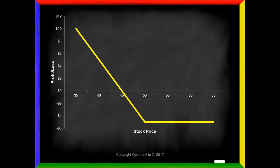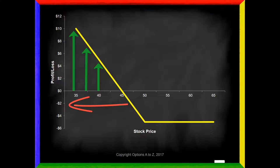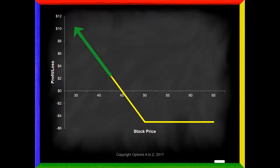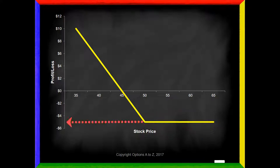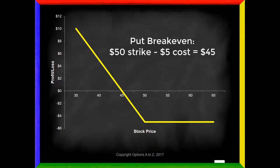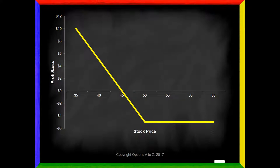Once you understand how to read profit and loss diagrams, strategies become much easier. Here's what a $50 put purchased for $5 would look like — it still resembles a hockey stick but moving in the opposite direction, so I can quickly tell this is a bearish outlook. I need the stock to fall to get the graph above zero. I can make money all the way down to a stock price of zero, but if the stock rises above 50 at expiration I have a fixed loss of $5. The break-even for a put is the strike minus the purchase price: $50 minus $5 equals $45.